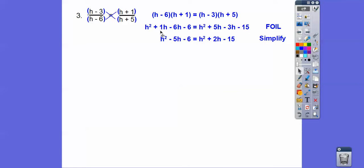I combined like terms. 1h minus 6h is negative 5h. And 5h minus 3h is 2h. Can you see how I foiled, you guys? I did first times first is this h squared. Outer times outer is the 1h. And then inner times inner is the negative 6h. And then negative 6 times 1 is negative 6. And I foiled this side out and got this side.